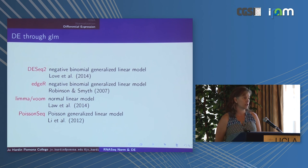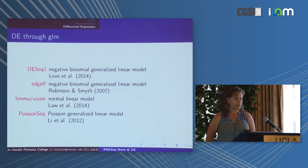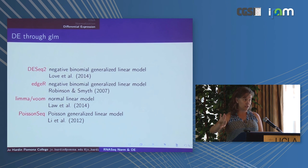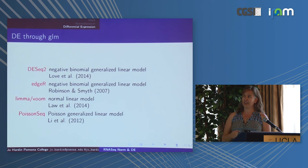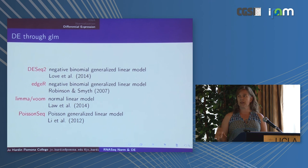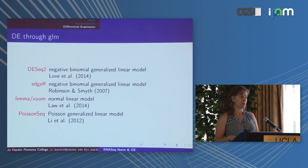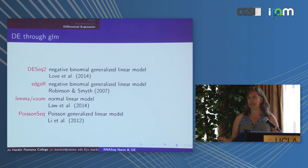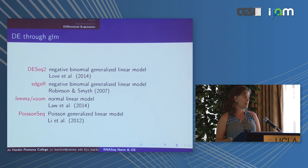Several DE tools use these generalized linear model techniques. DESeq2 uses the same normalization I walked through, but instead of discrete probability models it uses the negative binomial within the GLM context. EDGE-R also uses a negative binomial GLM. LIMMA and VOOM use a normal linear model — LIMMA was originally for microarray differential expression and VOOM is the RNA-seq extension. PoissonSeq uses a GLM with a Poisson probability model.